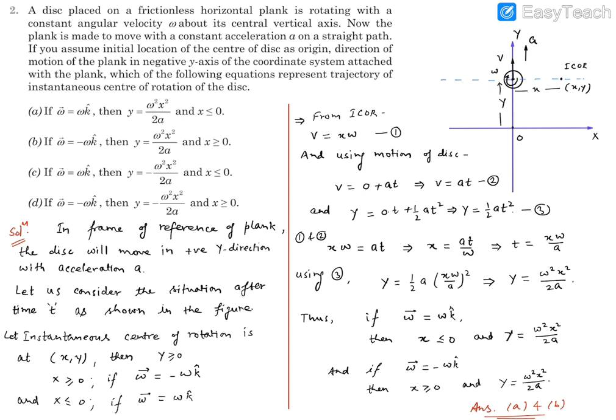So at this point of time, the instantaneous center of rotation will be such that if we draw a line which is perpendicular to the velocity and using this omega's instantaneous center of rotation has to be there so that this velocity can be justified.